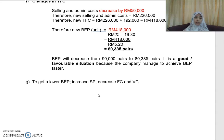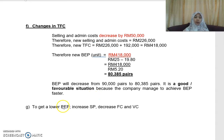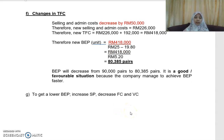Part (g) asks for three methods to lower your break-even point. These are: increase your selling price, decrease your fixed cost, or decrease your variable cost. That concludes the tutorial — hopefully this gives a clearer picture of CVP analysis for single product. Thank you.